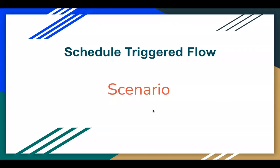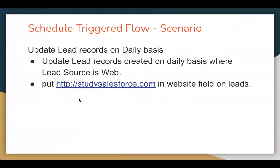Hello everyone, I am Sanjay Gupta. I welcome you on Sanjay Gupta Tech School. In this video I am going to demonstrate a scenario based on schedule triggered flow. We need to update lead records on a daily basis. We need to check the lead source field on the lead records — if lead source is 'Web', then we need to put the website URL, that is studysalesforce.com, in the website field on the lead object.